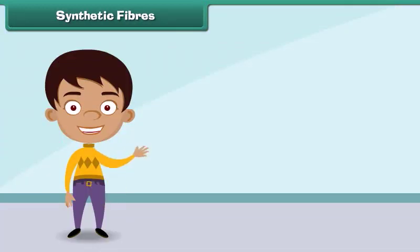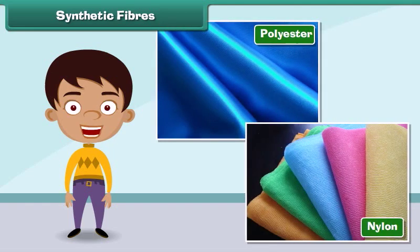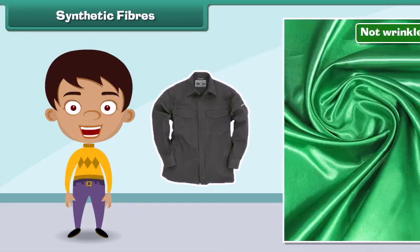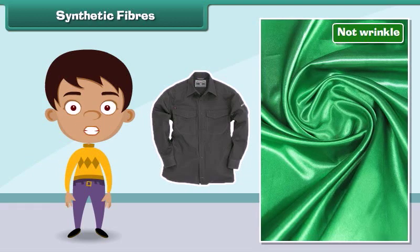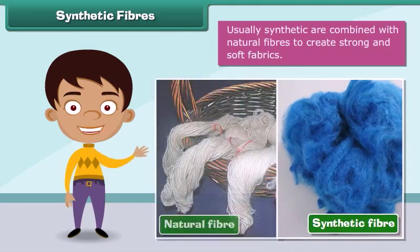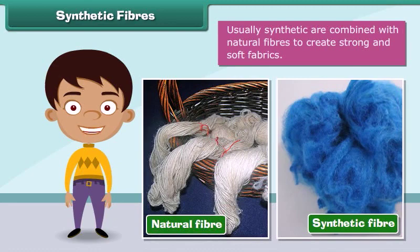Synthetic fibers are man-made. Nylon and polyester are examples of synthetic fibers. Fabric made from synthetic fibers is cheap, dries easily, and does not wrinkle. Usually, synthetic fibers are combined with natural fibers to create strong and soft fabrics.